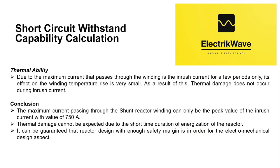Thermal ability: due to the maximum current that passes through the winding being the inrush current for only a few periods, its effect on the winding temperature rise is very small. As a result, thermal damage does not occur during inrush current. Conclusion: the maximum current passing through the shunt reactor winding can only be the peak value of the inrush current with a value of 750 ampere. Thermal damage cannot be expected due to the short time duration of energization of the reactor. It can be guaranteed that the reactor design with enough safety margin is in order for the electromechanical design aspect.